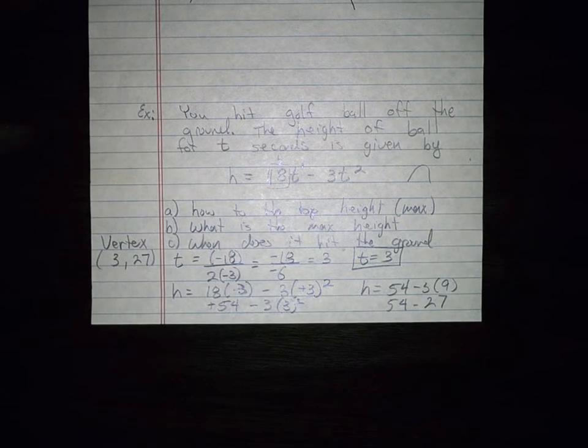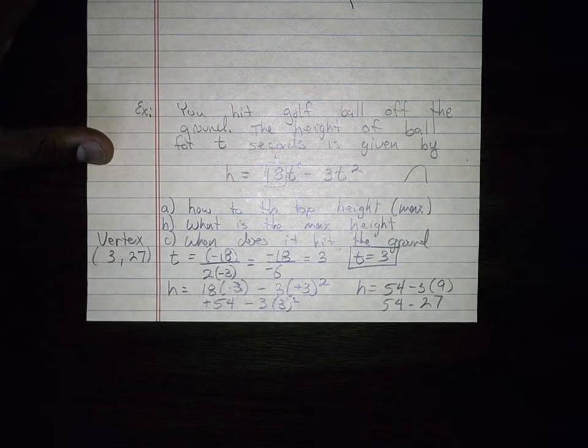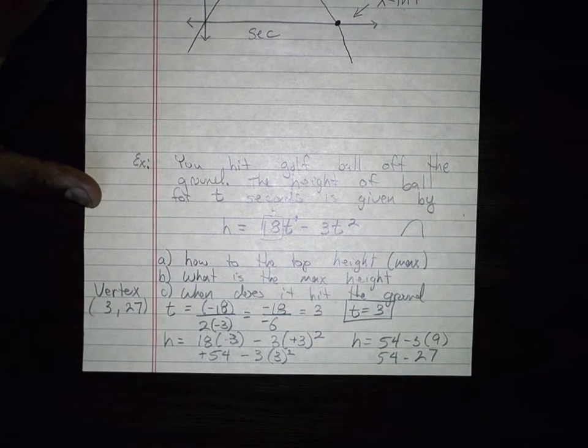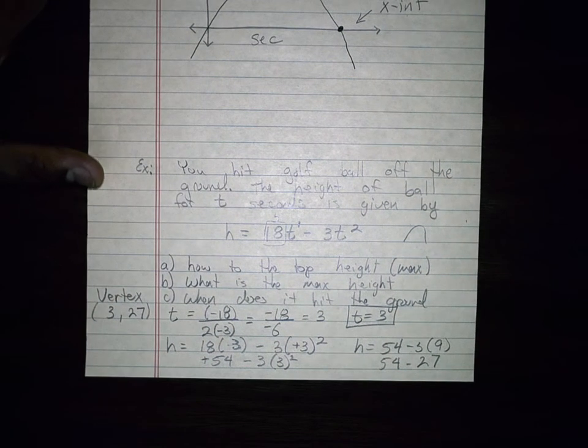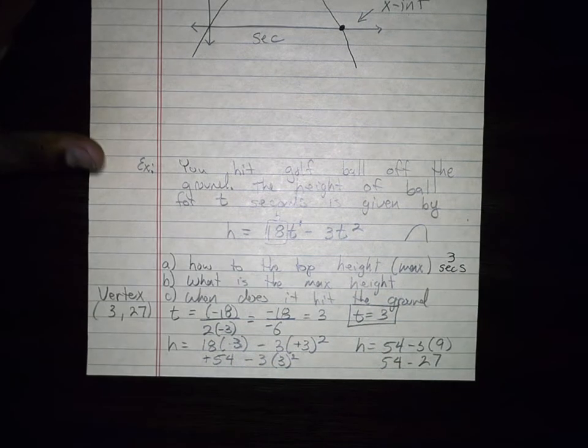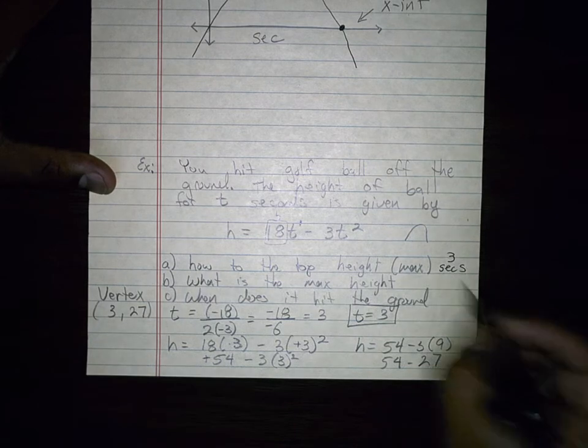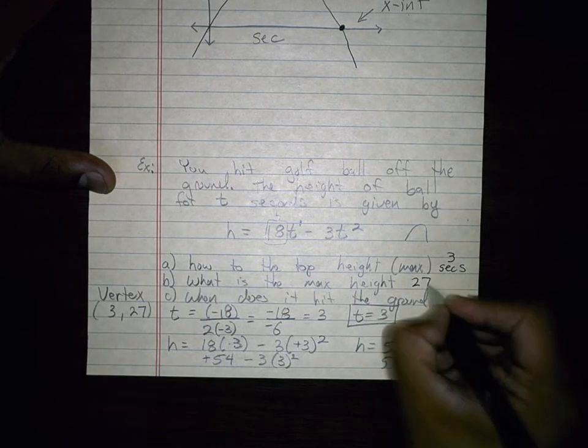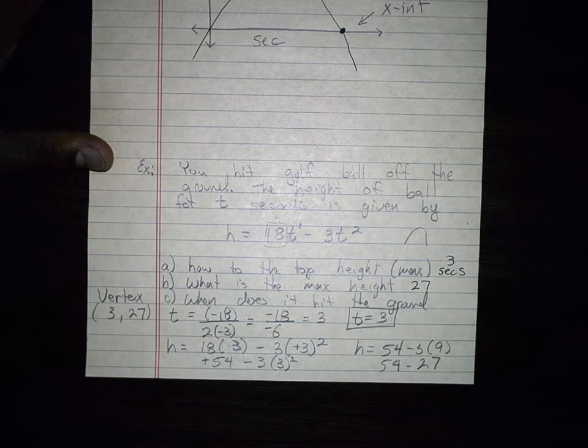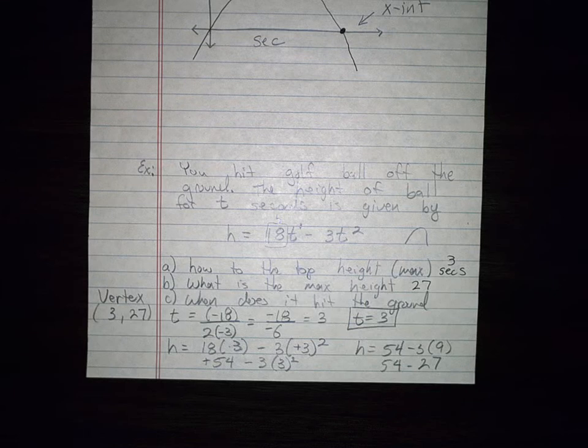So a, the question is how long is it to get to the top height or the max height? What I would actually say is it's going to be 3 seconds. What is the maximum height? That's my y for my vertex, and that's going to be 27. I didn't really give you a unit, so we'll just leave it at 27. And when does it hit the ground? Well, we haven't figured that out yet. So let's go ahead and do that.